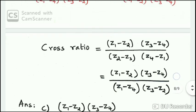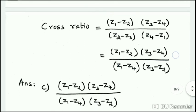Option C: the answer is (Z1 - Z2)(Z3 - Z4) divided by (Z2 - Z3)(Z4 - Z1) — or equivalently involving Z1 - Z4 and Z3 - Z2.